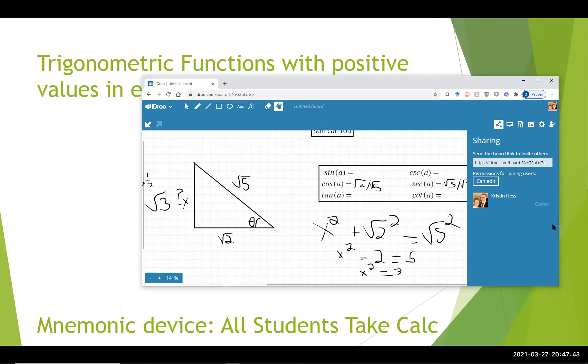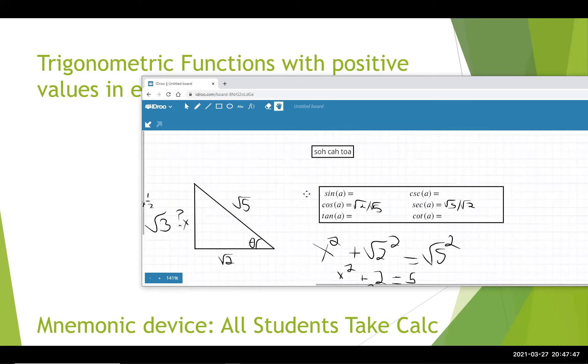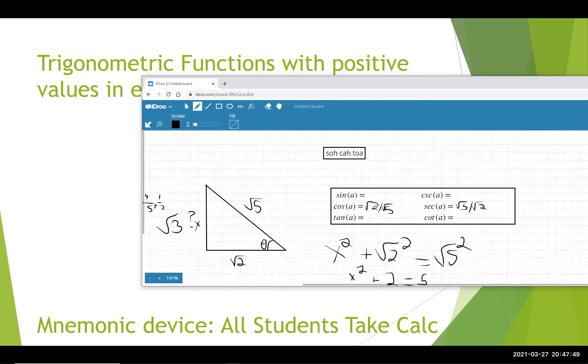And now we can fill in the rest. So using SOHCAHTOA, we know that sine is the opposite side over the hypotenuse. So here's my angle, opposite side is the square root of 3 over the hypotenuse of the square root of 5.